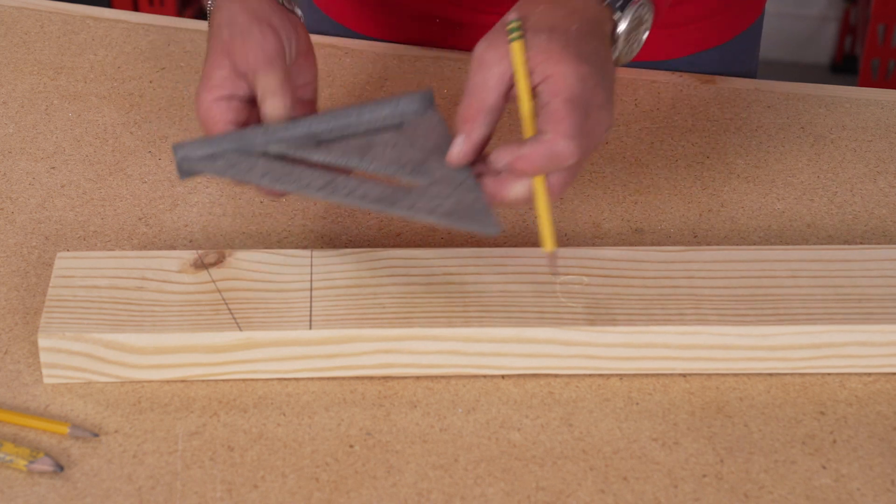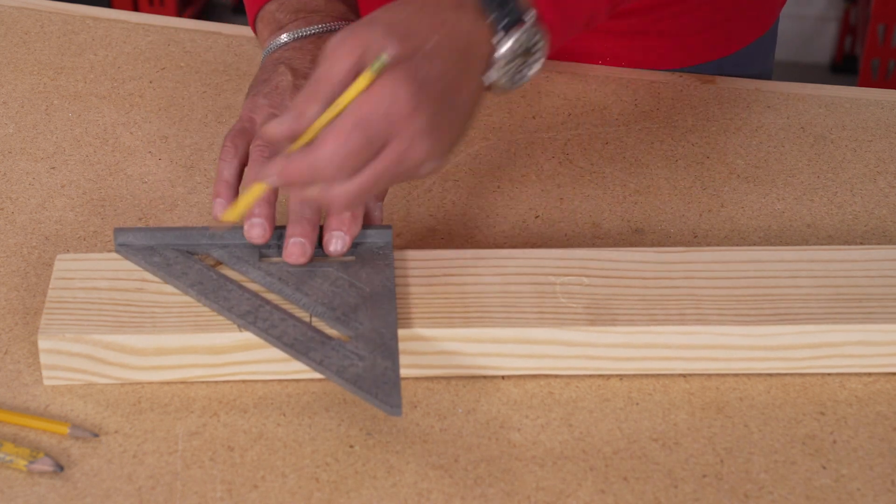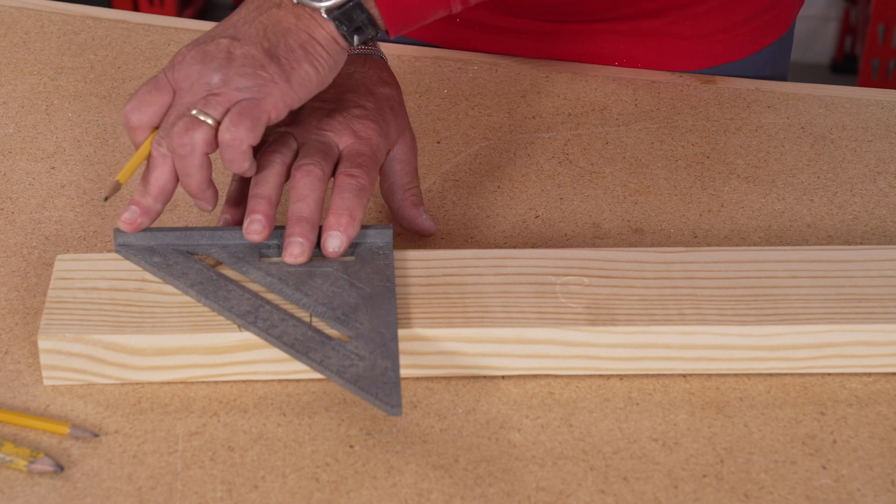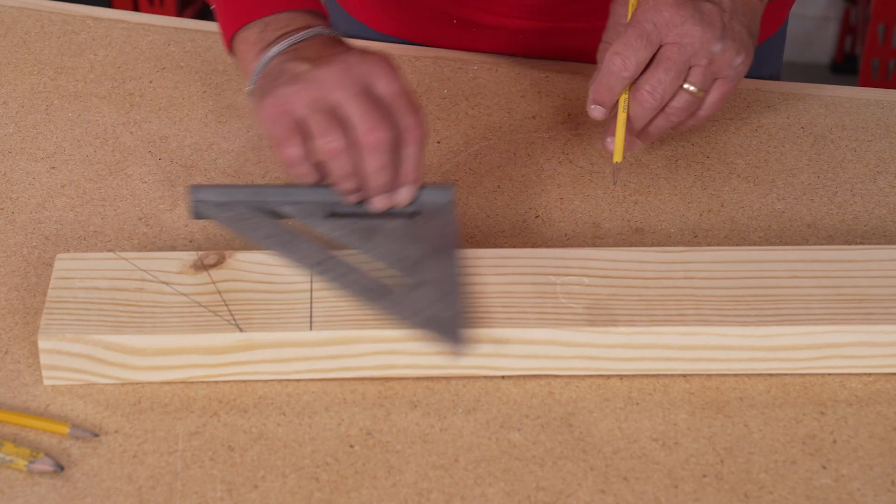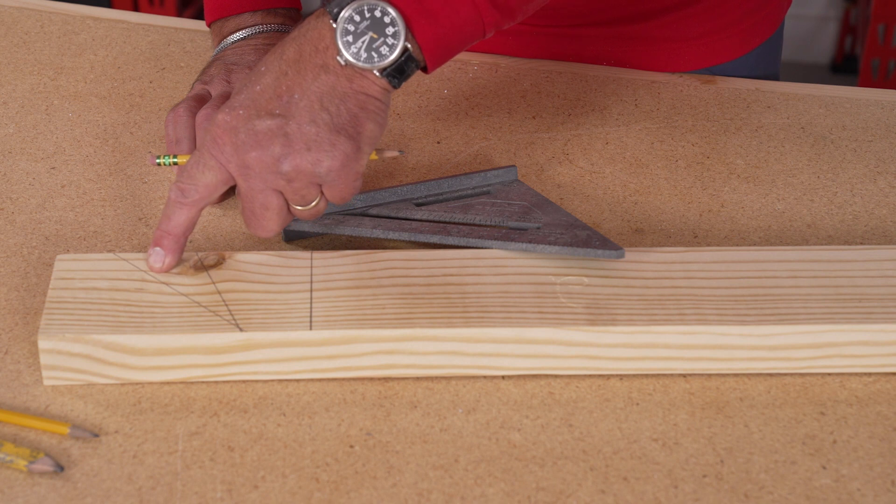If you wanted to draw a 45 degree angle, if I flip this over, you see that same stop is there on the speed square, and I draw this, that's a 45 degree angle.